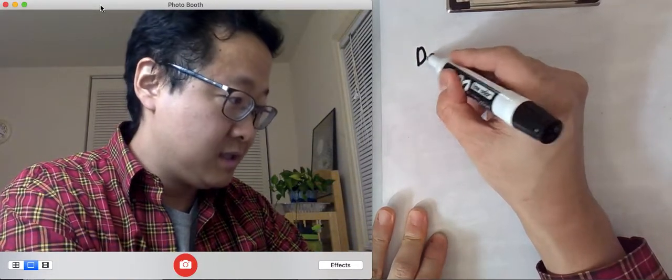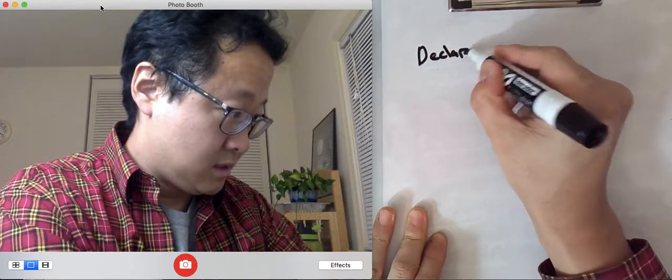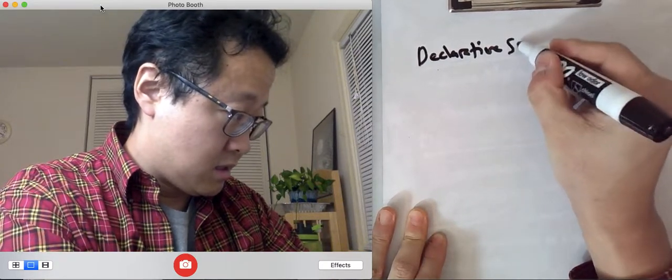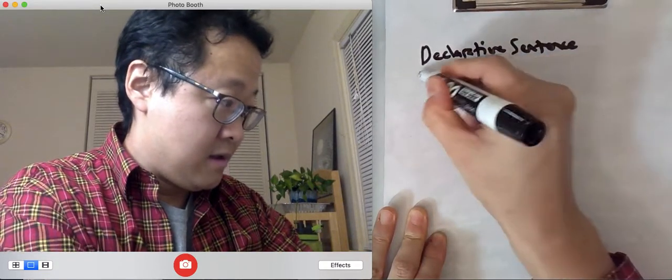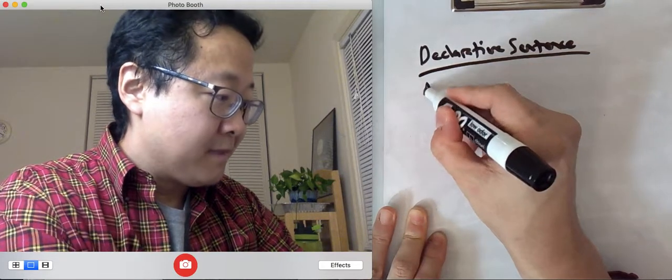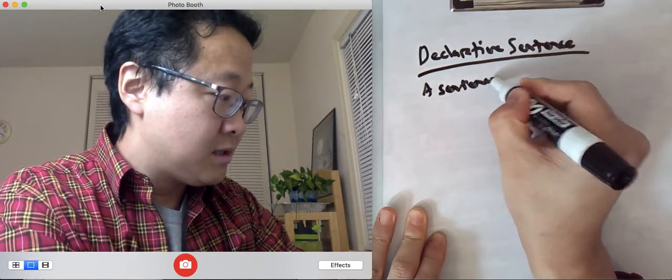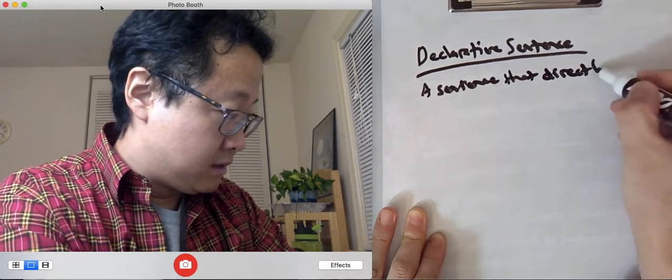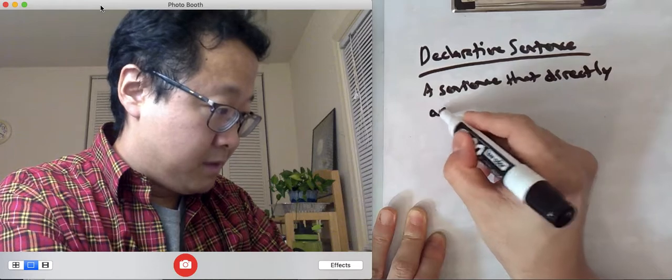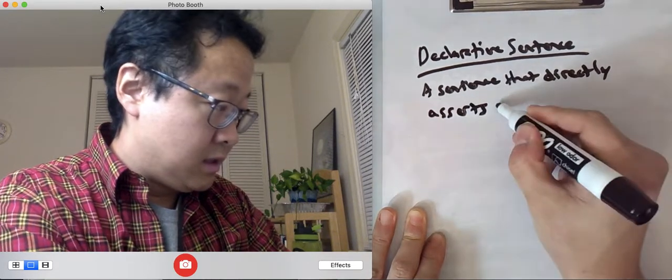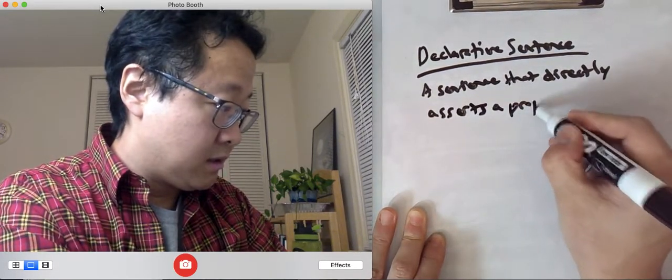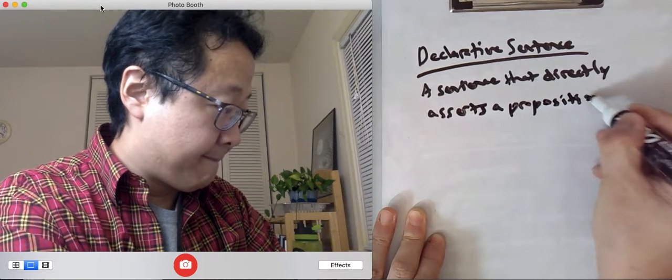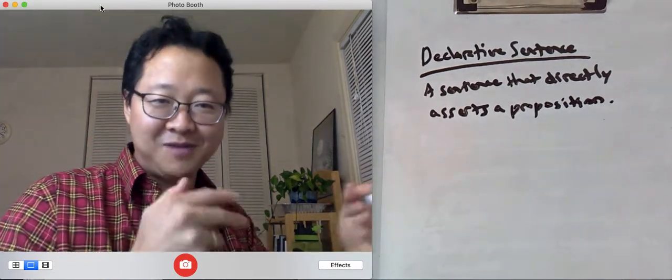So a declarative sentence is a sentence that directly asserts a proposition, or a sentence that directly makes a claim.